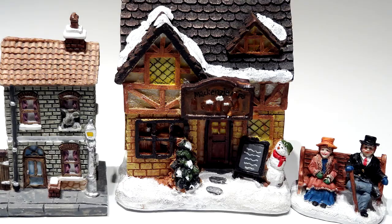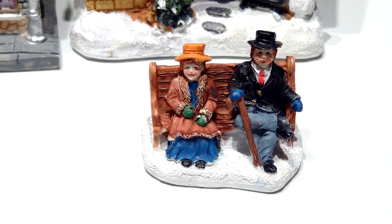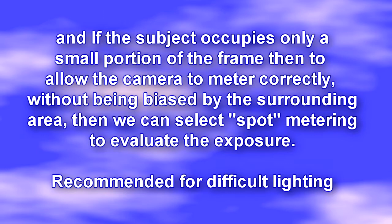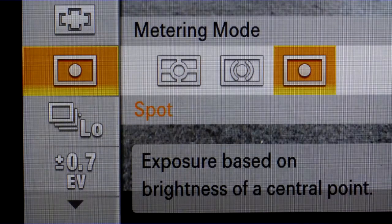If the subject is small and the background is lighter or darker than it, again the camera will under or overexpose the image. In this situation it is better to select a metering mode which concentrates on just a very small central area. This we call spot metering.